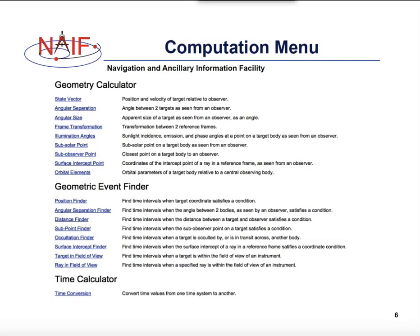Pulling up the front page of WGC shows these categories and multiple calculation types provided under them, such as state calculations, angular size calculations, searches for subpoints, and occultations.